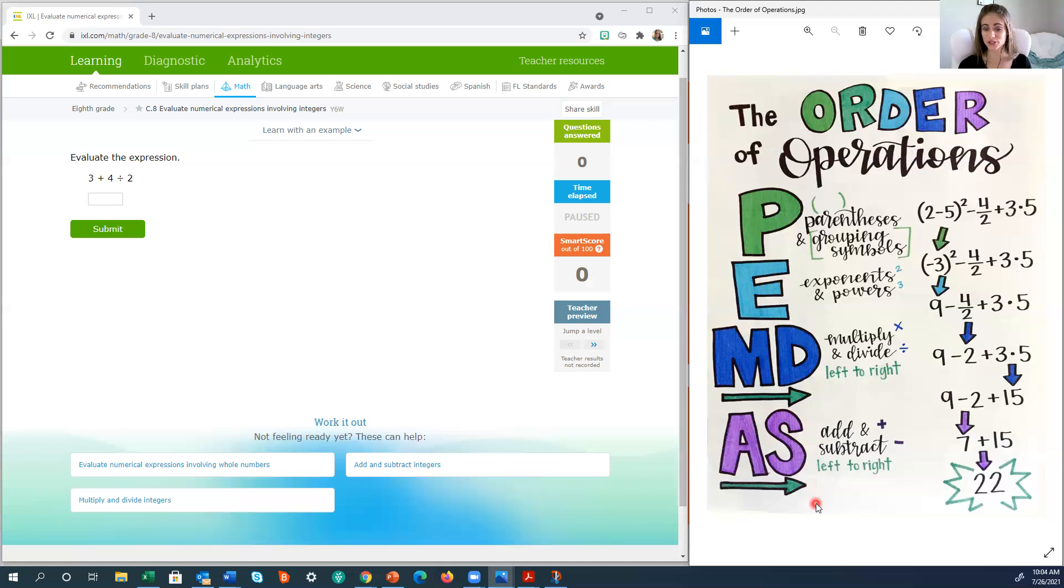And same goes for the final step, addition and subtraction. That is also done left to right. So we look right here at the example that matches it. Even though the word add comes first, you do addition and subtraction left to right. So first we would subtract, then lastly we add.